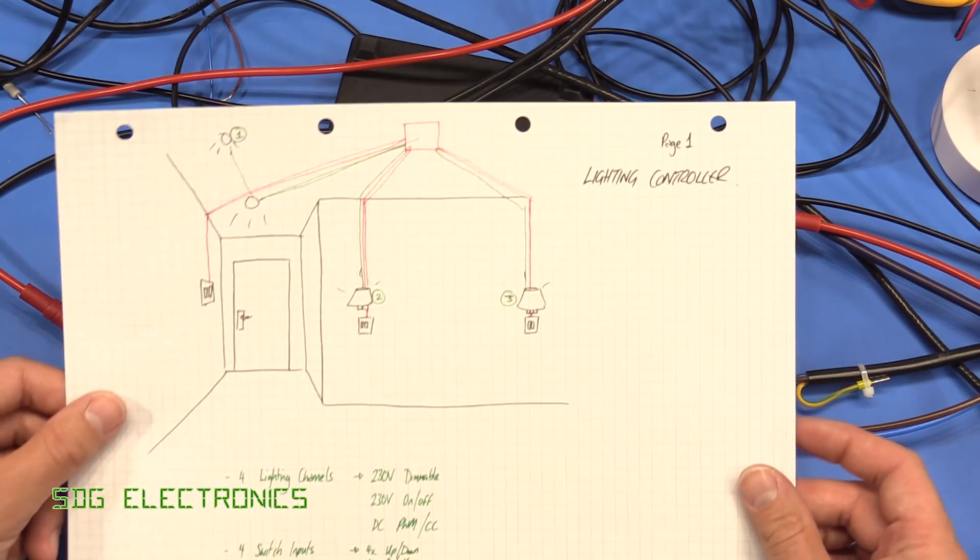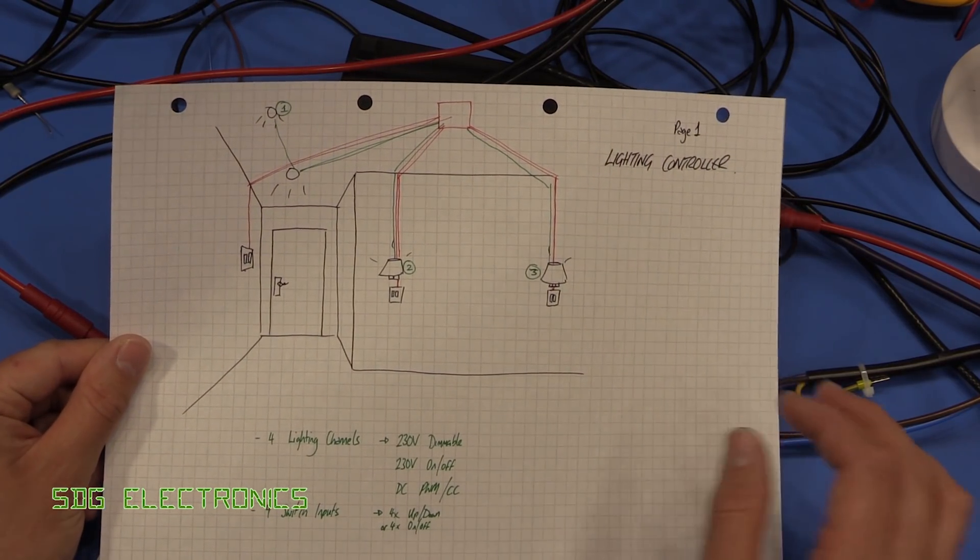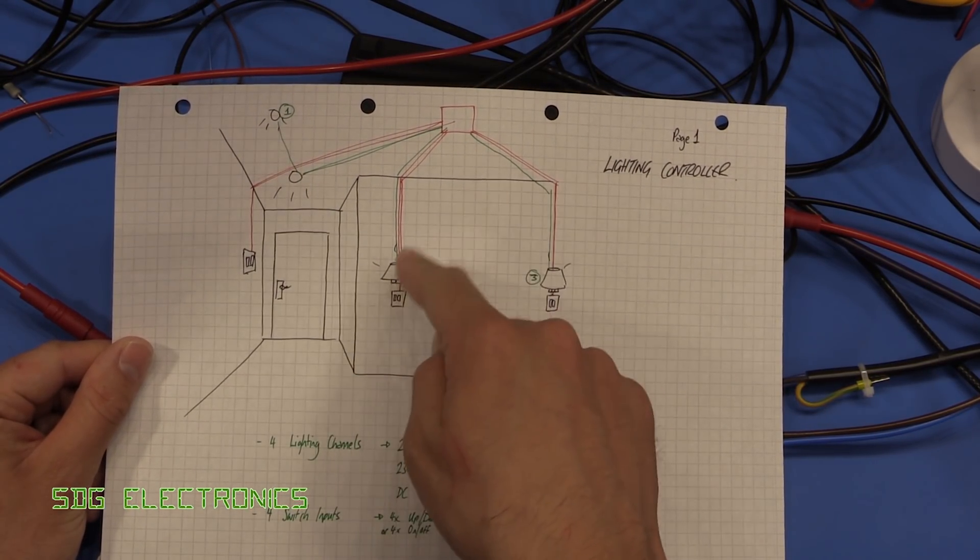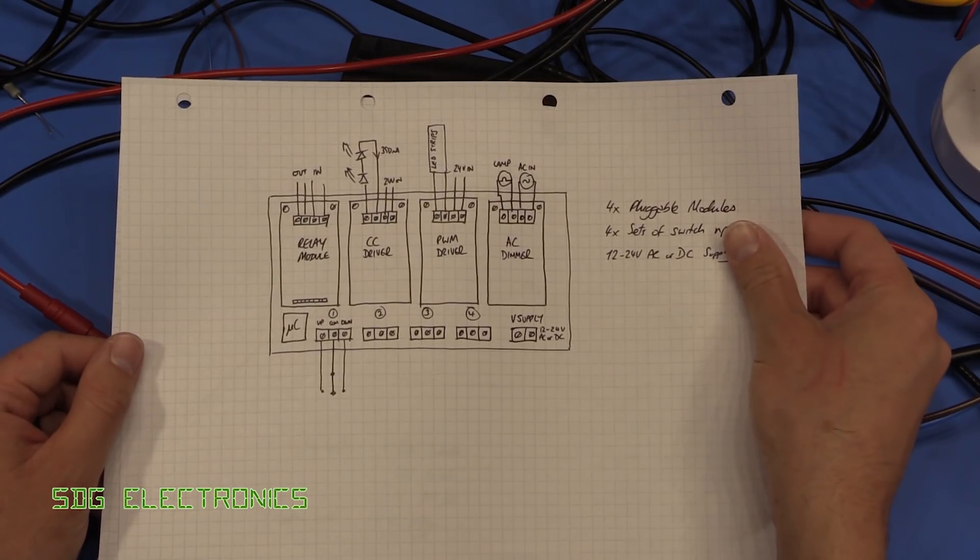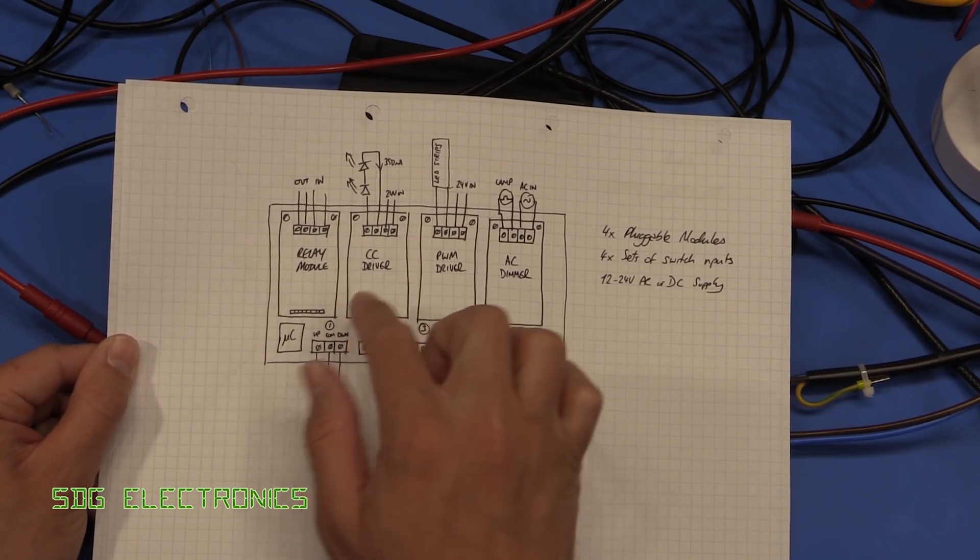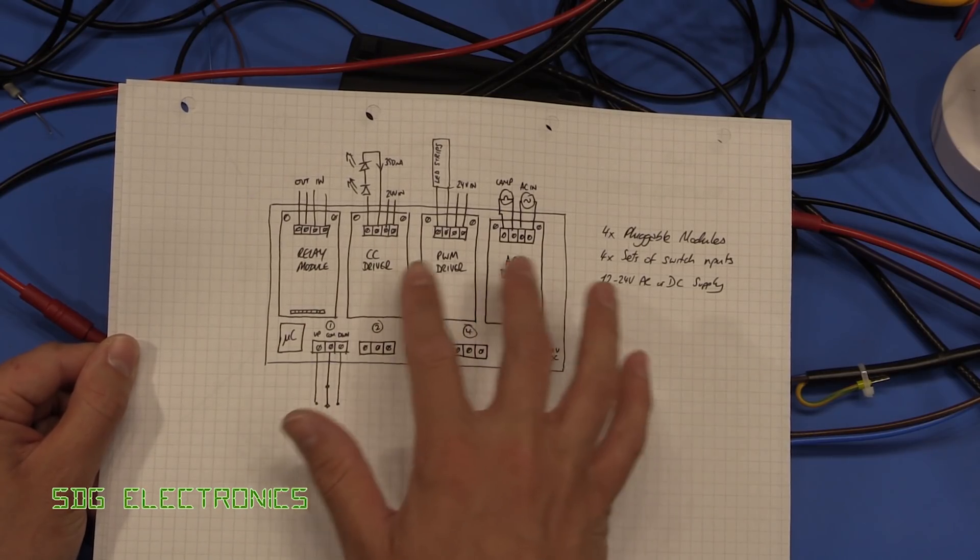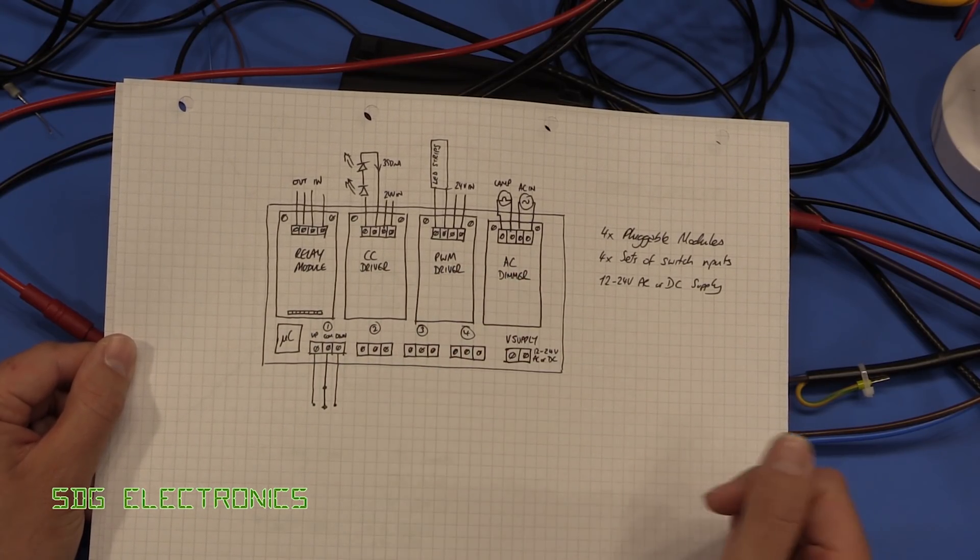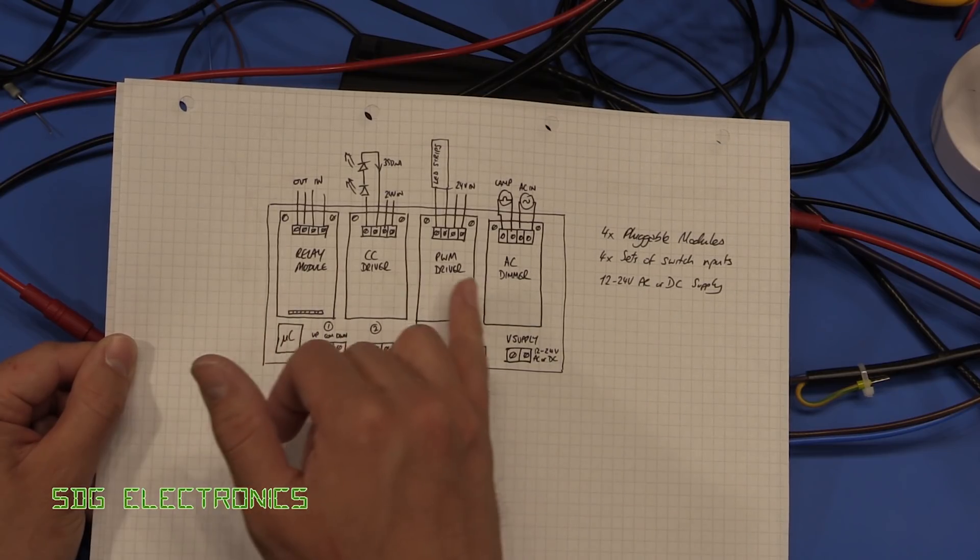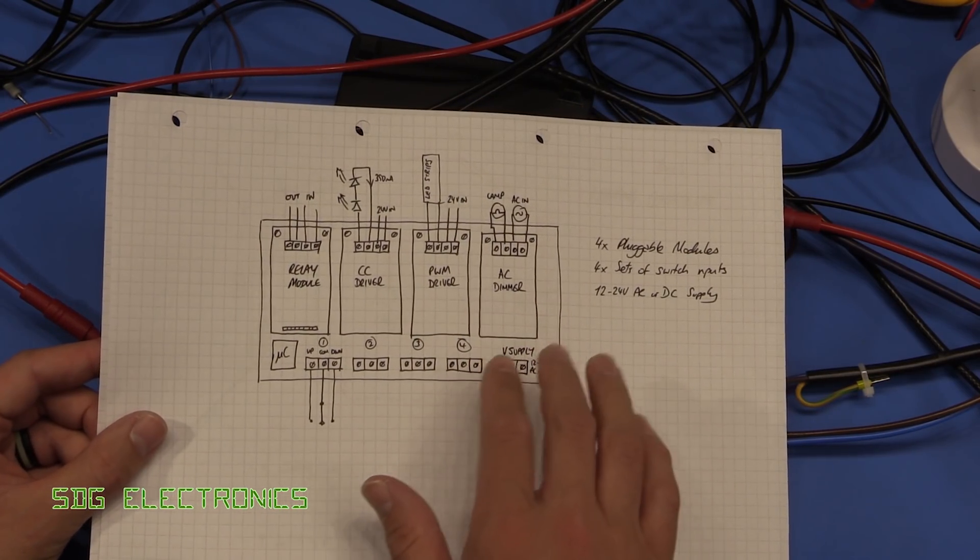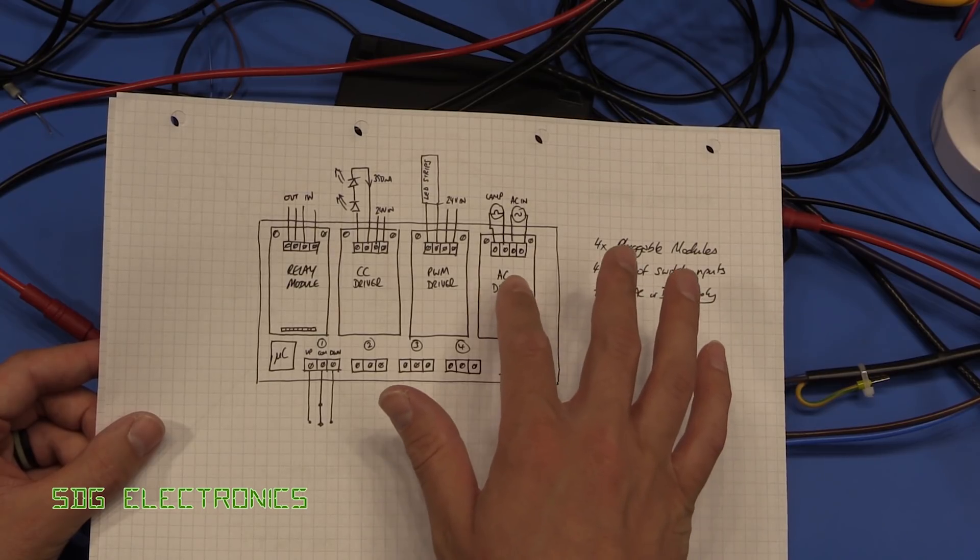So if you remember from my original video introducing this idea I was going to have a bunch of different lights connected to this unit onto this sort of baseboard PCB so where we could plug in different drivers onto a main board and individually control these and mix and match these plug-in PCBs however we want depending on what we want to connect to the board.